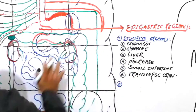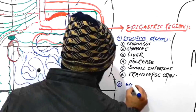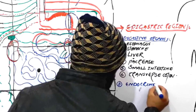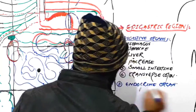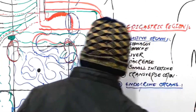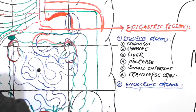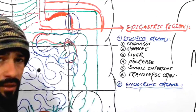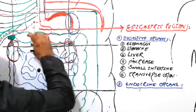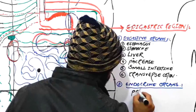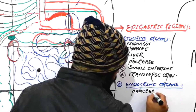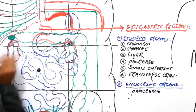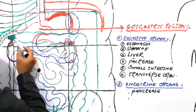The next group of organs found in the epigastric region is the endocrine organs. What endocrine organs are found in the epigastric region? First of all, the thing you should not forget is the pancreas. The pancreas is present in the epigastric region, and that is why we say the first endocrine organ present in the epigastric region is the pancreas.